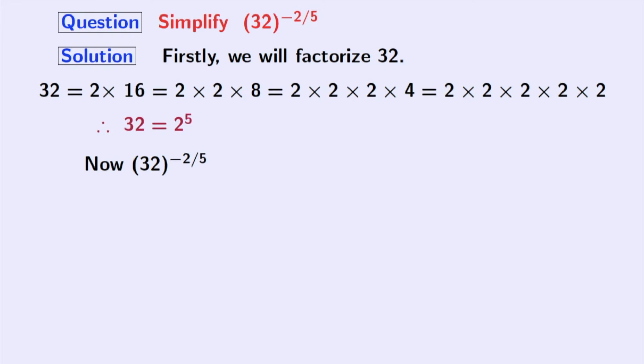Now, our given quantity is 32 whole power minus 2 by 5. Using this fact, we will write it as 2 power 5 whole power minus 2 by 5. Now, this quantity can be expressed as 2 power 5 times minus 2 by 5.